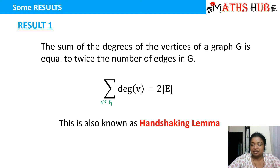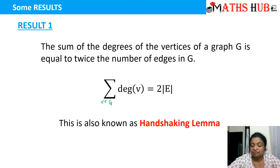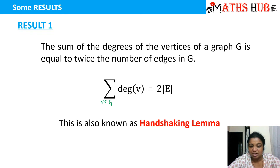This result is also known as the handshaking lemma, and it is very important in the sense that if the degrees are known to us, we can determine the edges. Similarly, if the edges are known and the sum of the vertex degrees is known, then we can calculate the remaining vertices. We'll do some applications after covering all the results.